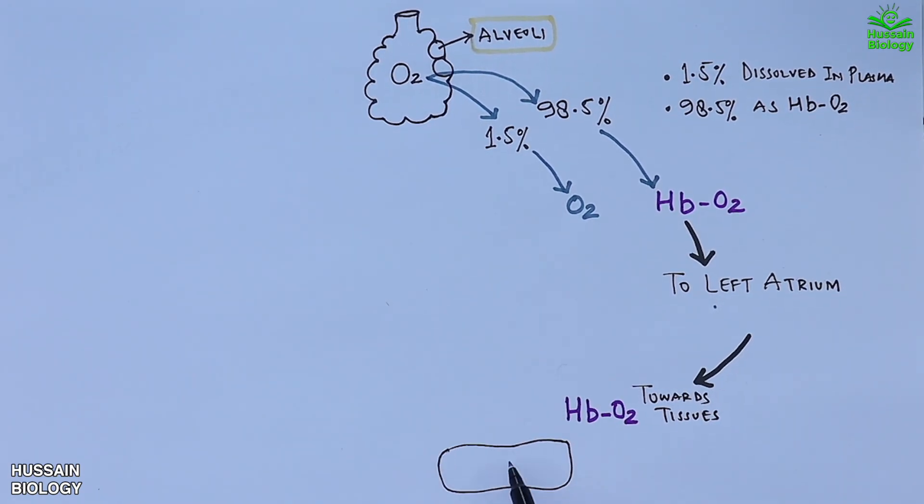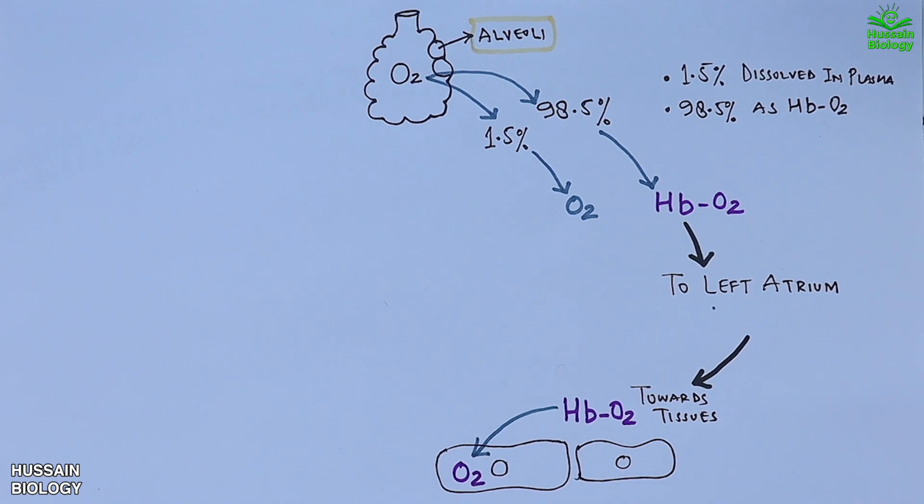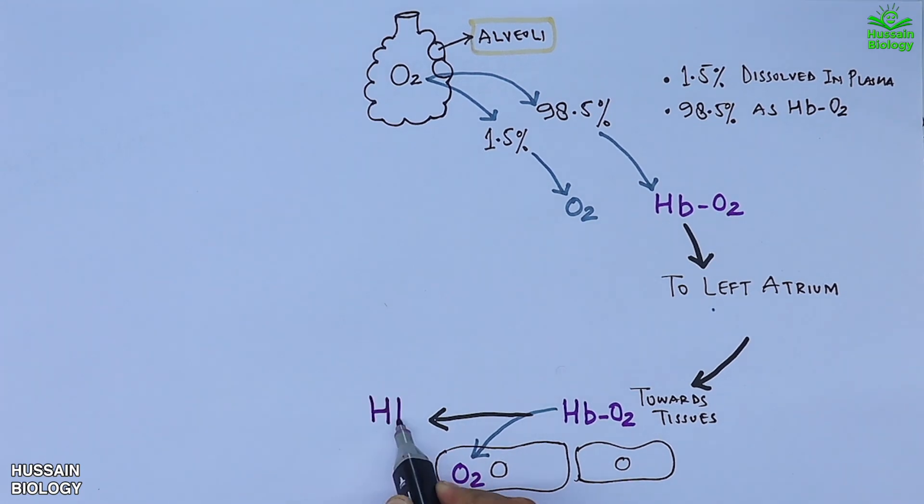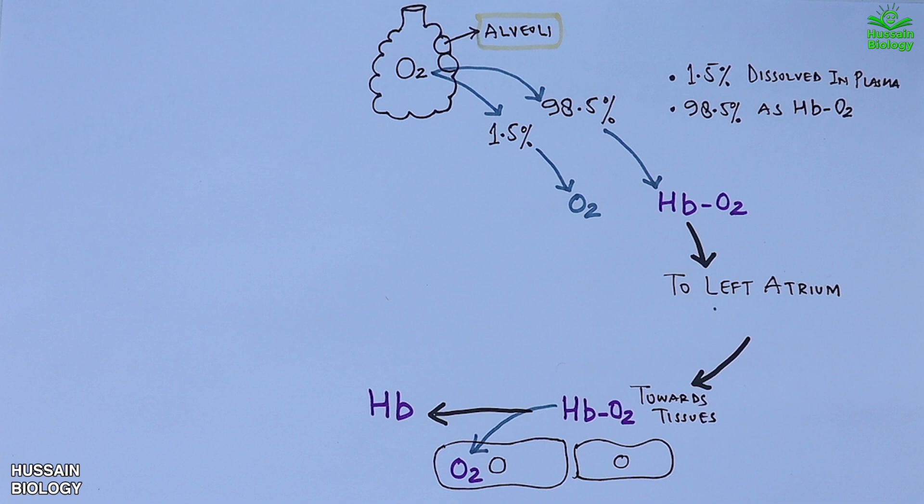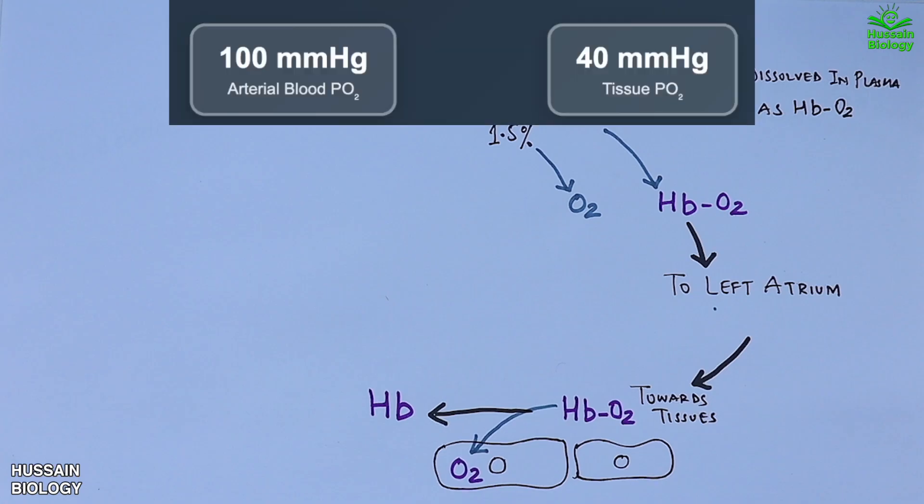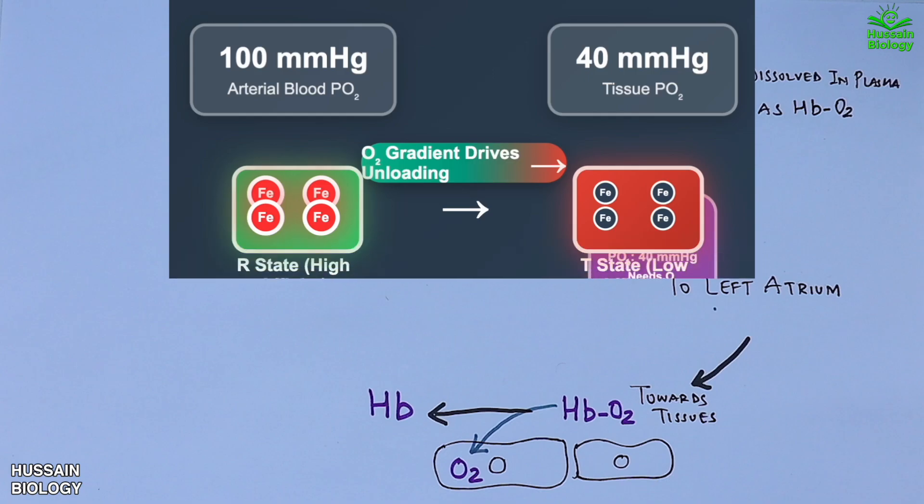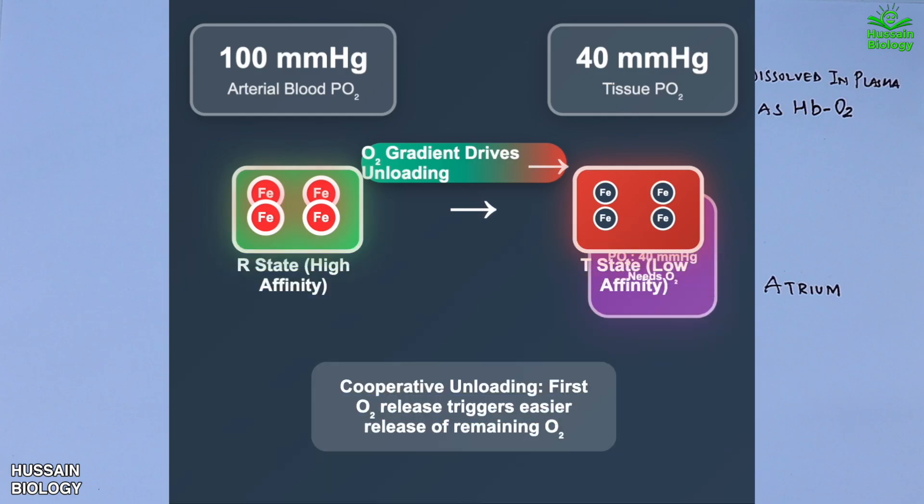When oxyhemoglobin reaches the tissues, hemoglobin releases oxygen to supply the body cells. The first key factor is the tissue-blood PO2 gradient. In arterial blood, PO2 is about 100 mmHg, while in resting tissues it's around 40 mmHg. This difference drives oxygen to diffuse from hemoglobin in red blood cells into tissues. When the first O2 molecule leaves hemoglobin, it destabilizes the R state.